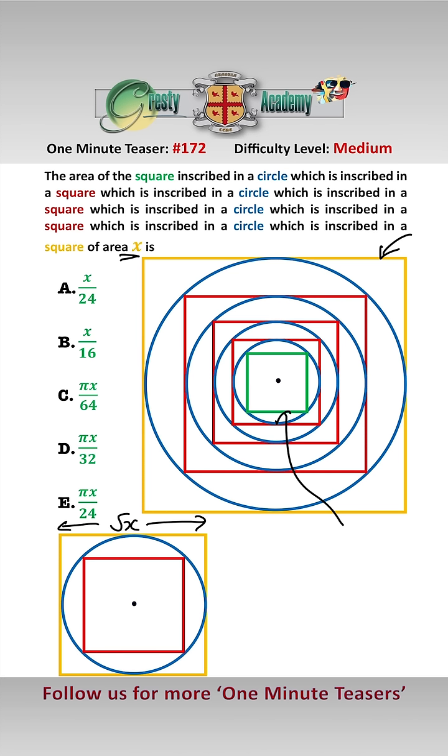Now that means that the diameter of the blue circle is also root x, which means that the radius of the blue circle is root x over 2. So let's just have a look at that, root x over 2 and root x over 2.